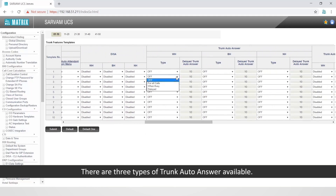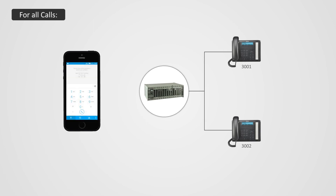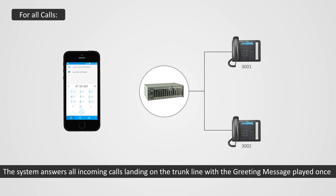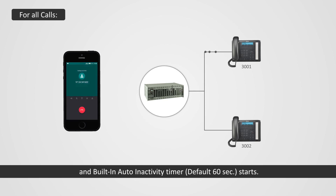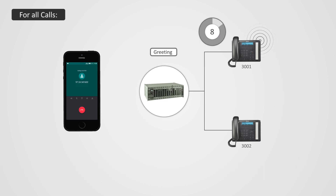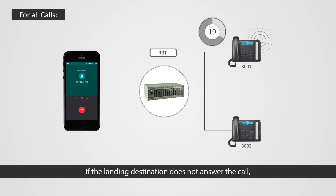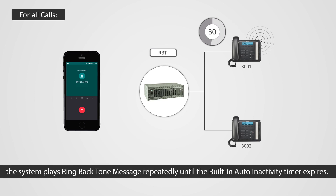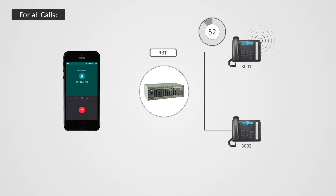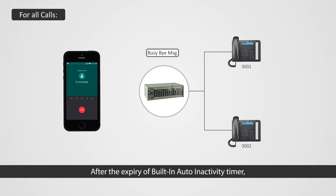There are three types of trunk auto answer available. For all calls: the system answers all incoming calls landing on trunk line with the greeting message played once, and a built-in auto inactivity timer — default 60 seconds — starts. If the landing destination does not answer the call, the system plays ringback tone message repeatedly until the built-in auto inactivity timer expires. After the expiry of the built-in auto inactivity timer, the system plays the busy-by message and releases the trunk port.